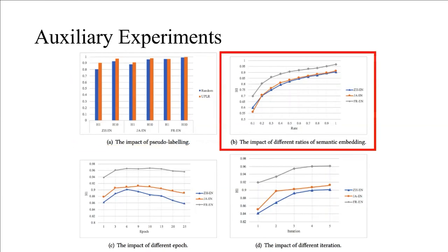The effects of different scales of semantic embedding on the model: experiment results in Figure B show that even with only 10% semantic information, our proposed model can still perform well.